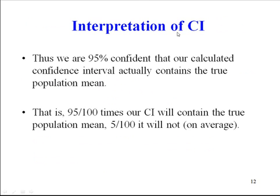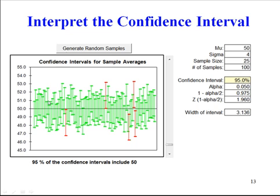So our confidence interval is: we're 95% confident that the true population average amount of debt that students have is between 2182 and 2448. The interpretation is: we're 95% confident that our calculated confidence interval actually contains the true population mean. What that means is 95 times out of 100 our confidence interval will contain the true population mean, and 5 out of 100 it won't, on average. Here's a picture: Excel generated 100 samples and made confidence intervals for a population with a mean of 50. All the green ones contain 50, and the red ones miss. On average 95 will get it and 5 will miss.